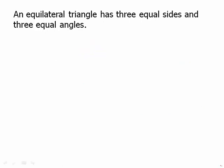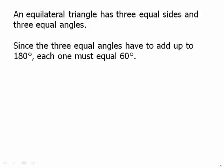An equilateral triangle has three equal sides and three equal angles. Since the three angles have to add up to 180 degrees, each one must equal 60 degrees. So an equilateral triangle always has three 60-degree angles. Here's an example equilateral triangle.